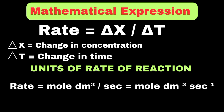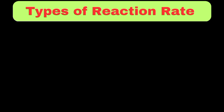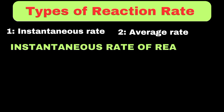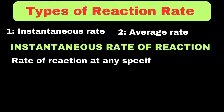Now let's move towards types of reaction rates. There are two main types: the instantaneous rate and the average rate of reaction. The instantaneous rate of reaction is defined as the rate of a chemical reaction at any specific time interval.